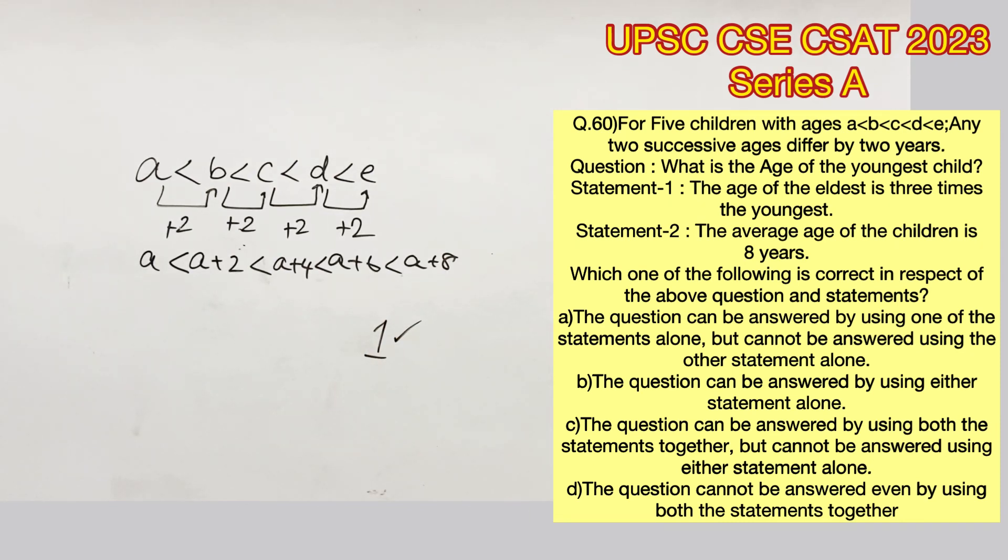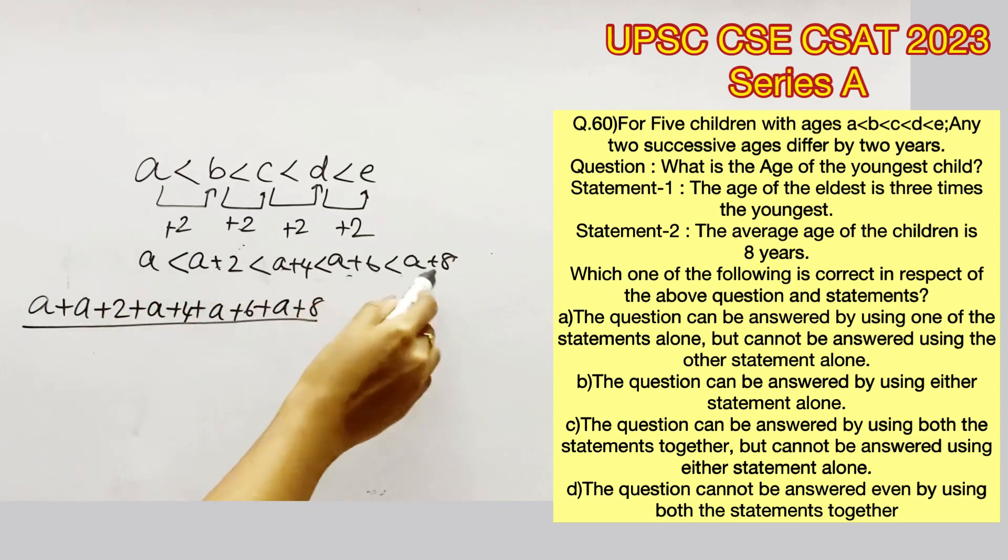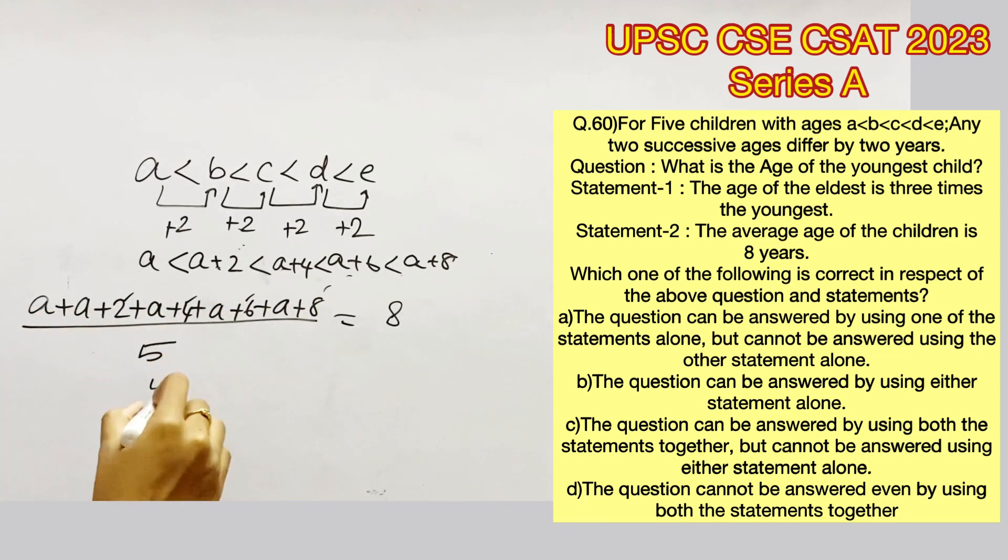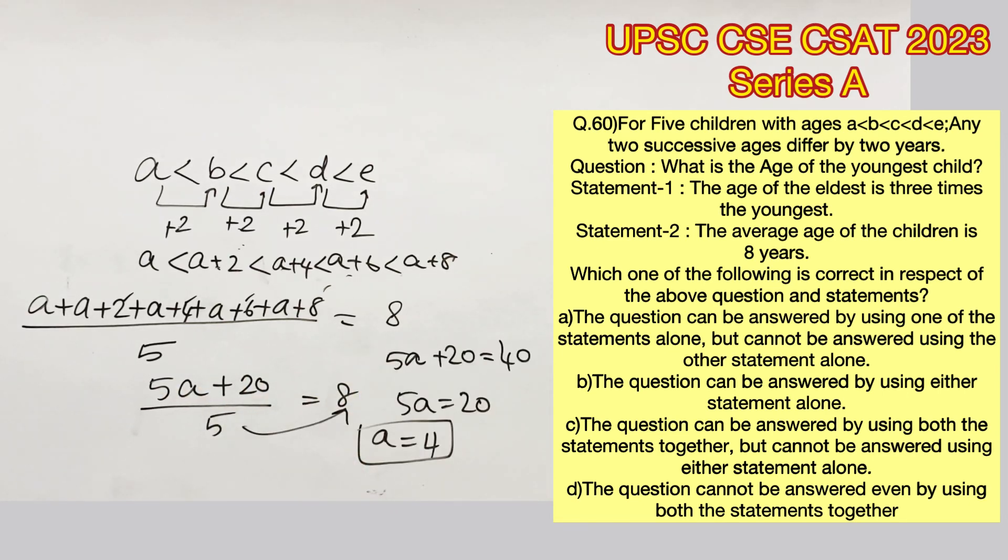Let's go to statement number 2. The average age of the children is 8 years. Average is the sum of the terms divided by the number of terms. Since there are 5 terms, we divide by 5. Solving this, we get 5A plus 20 by 5 equals 8, and A is equal to 4. So statement 2 alone is also sufficient to answer this question.